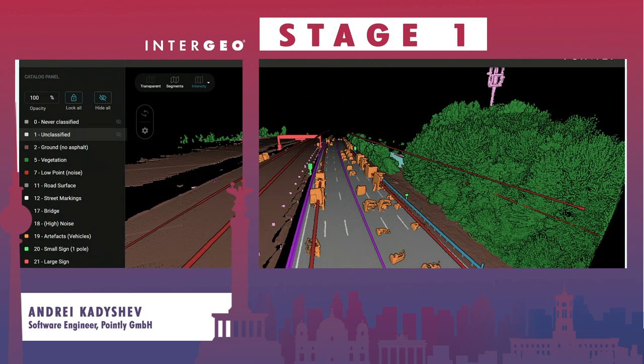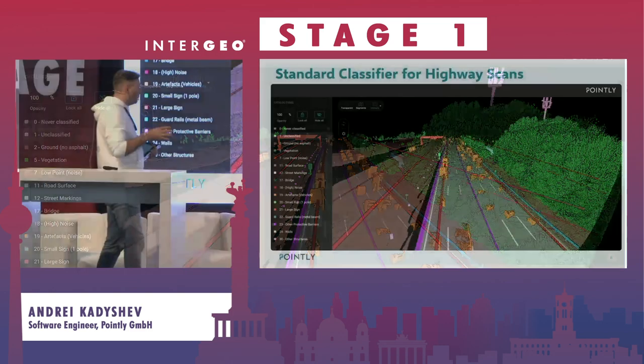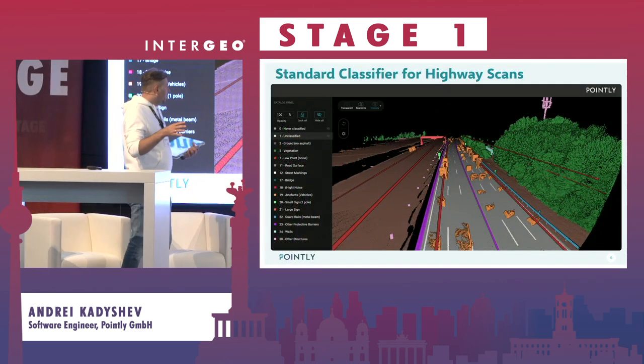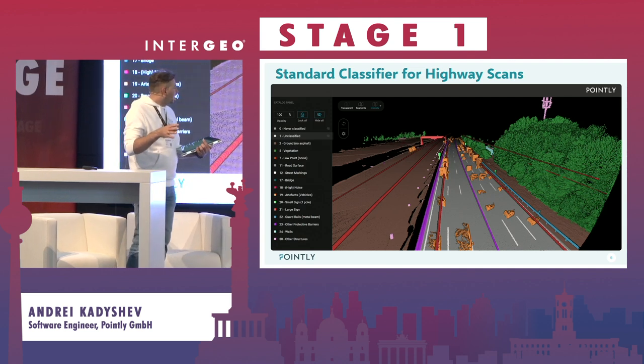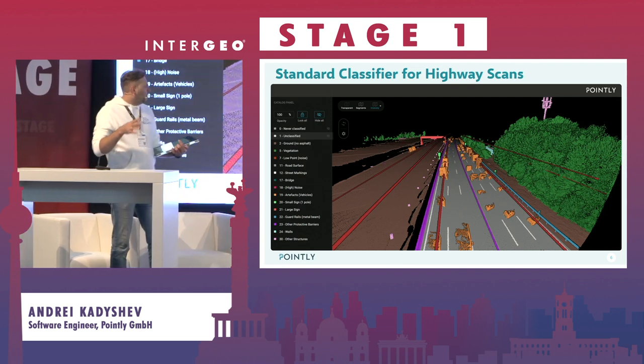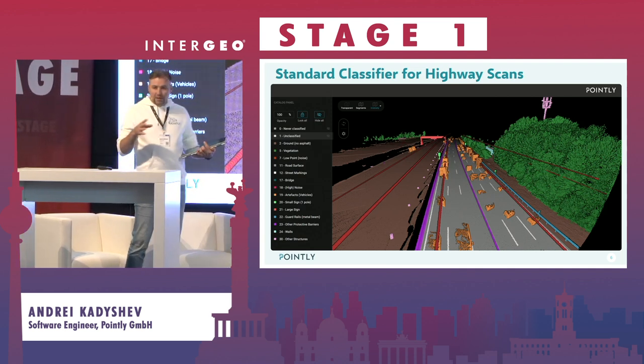Apart from the general solutions, we also offer more specialized classifiers, like a classifier for highways. This classifier is able to extract objects that are specific to highways — it may be fences, objects of road infrastructure around the highway, road signs, and so on.